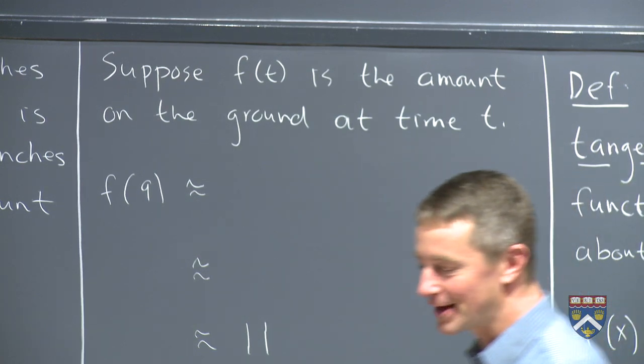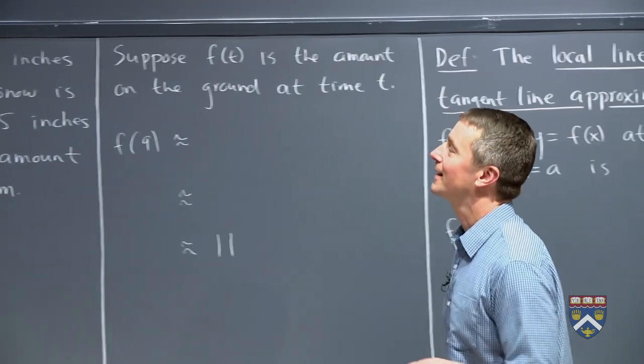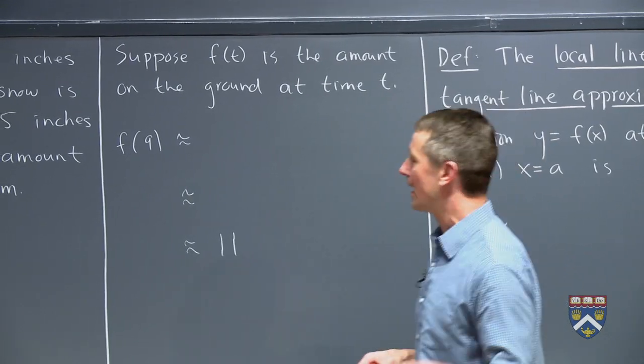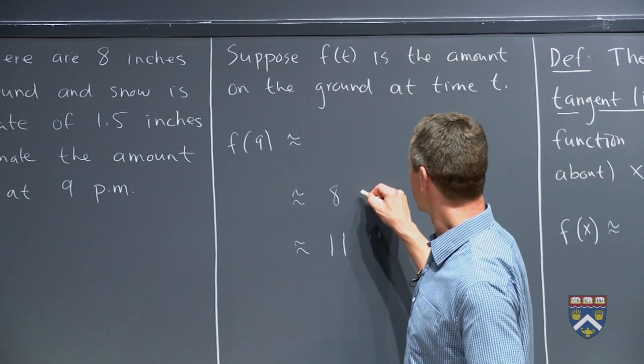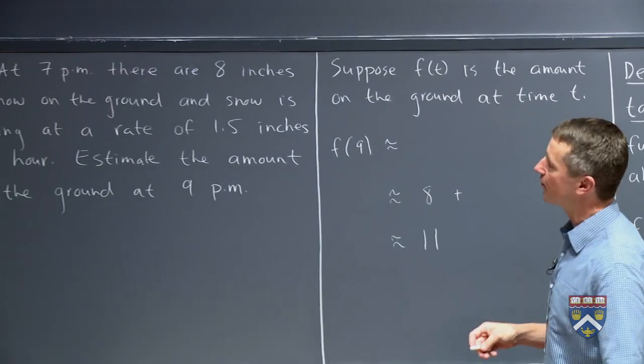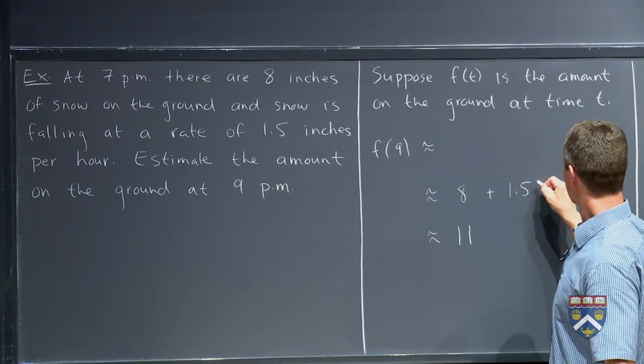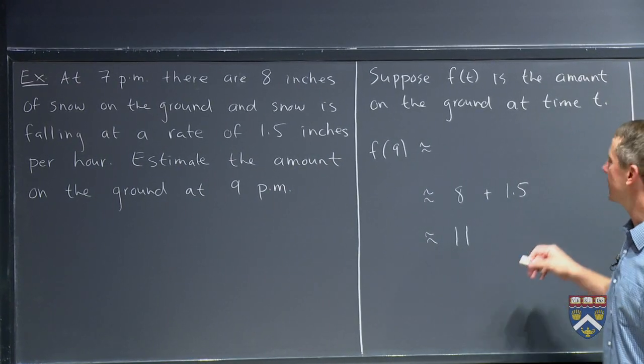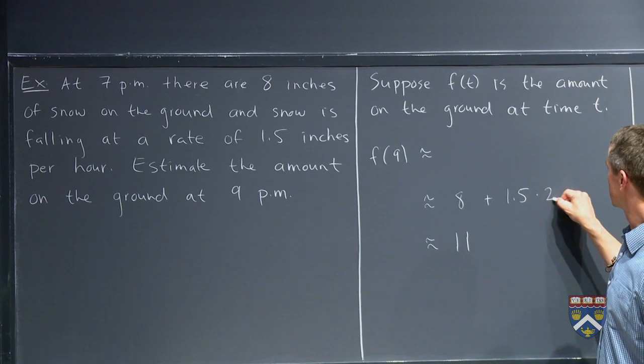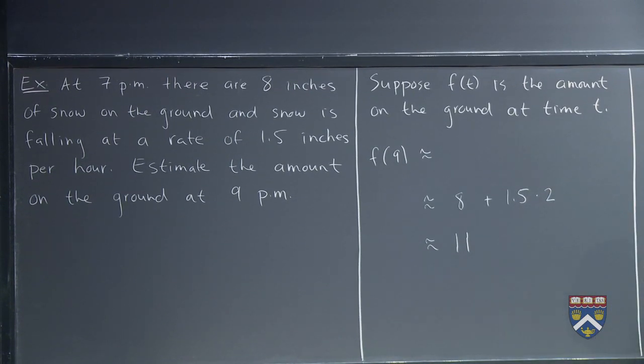Let's reconstruct how you got 11 for your answer. I'm guessing that you said well there was already 8 inches of snow on the ground and the snow was falling at a rate of 1.5 inches per hour and it was going to fall at that rate for another two hours and from that you got 11.